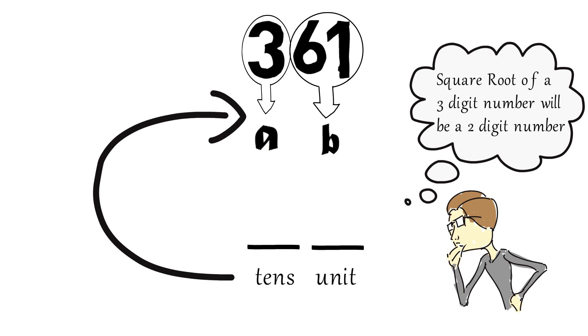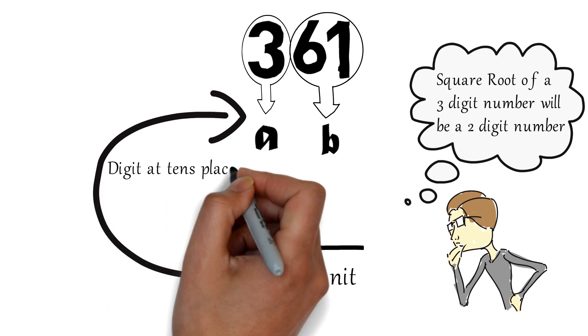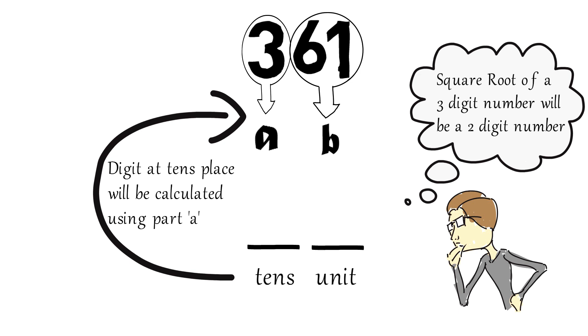The digit at tens place will be calculated using part a. Remember, the digit at tens place will be the digit preceding the number whose square exceeds the number a. Here I have written the squares of numbers from 1 to 9.